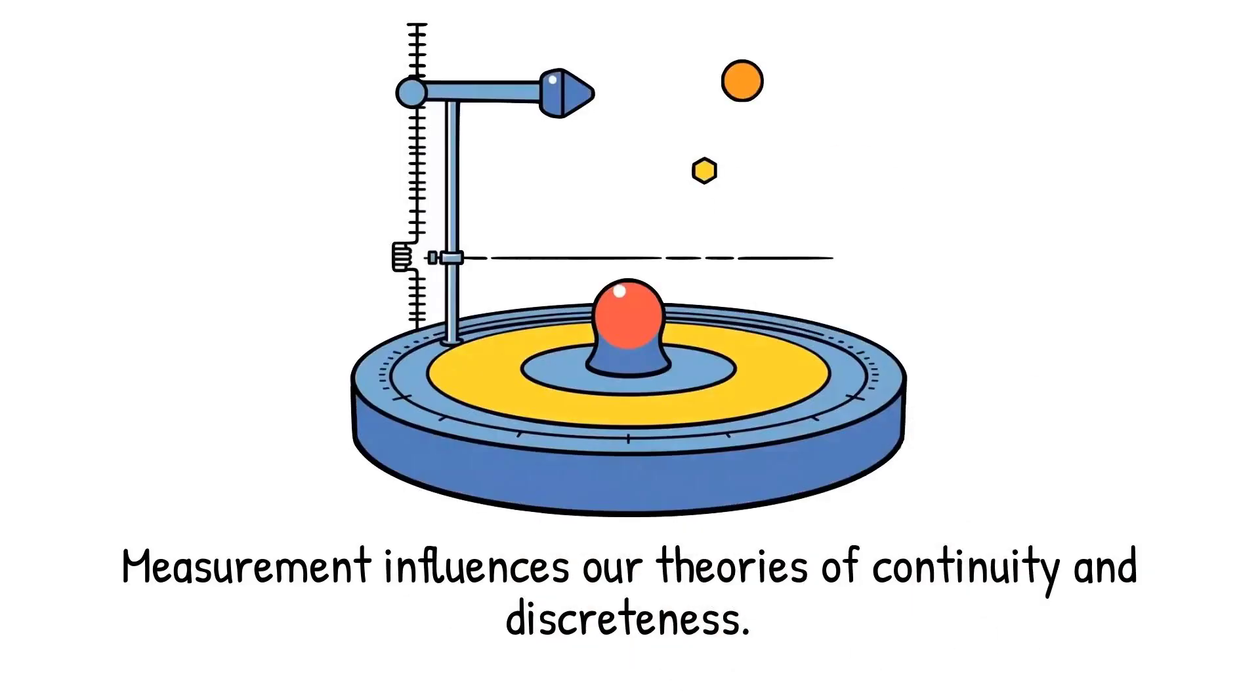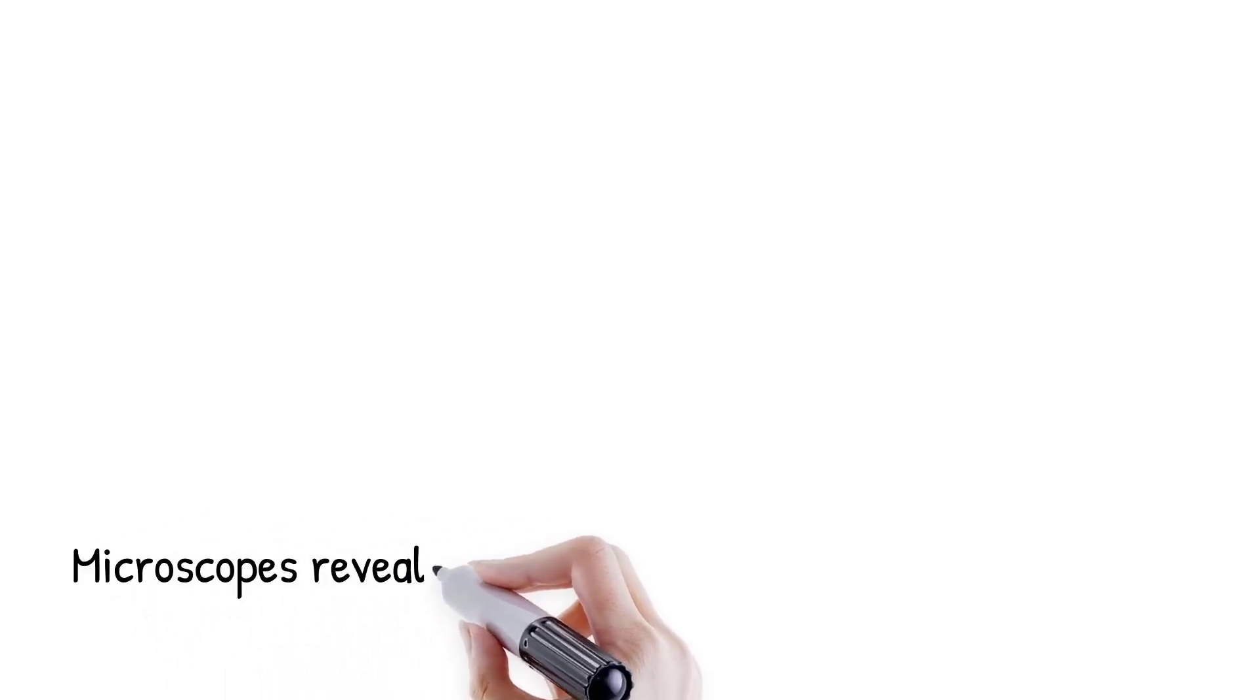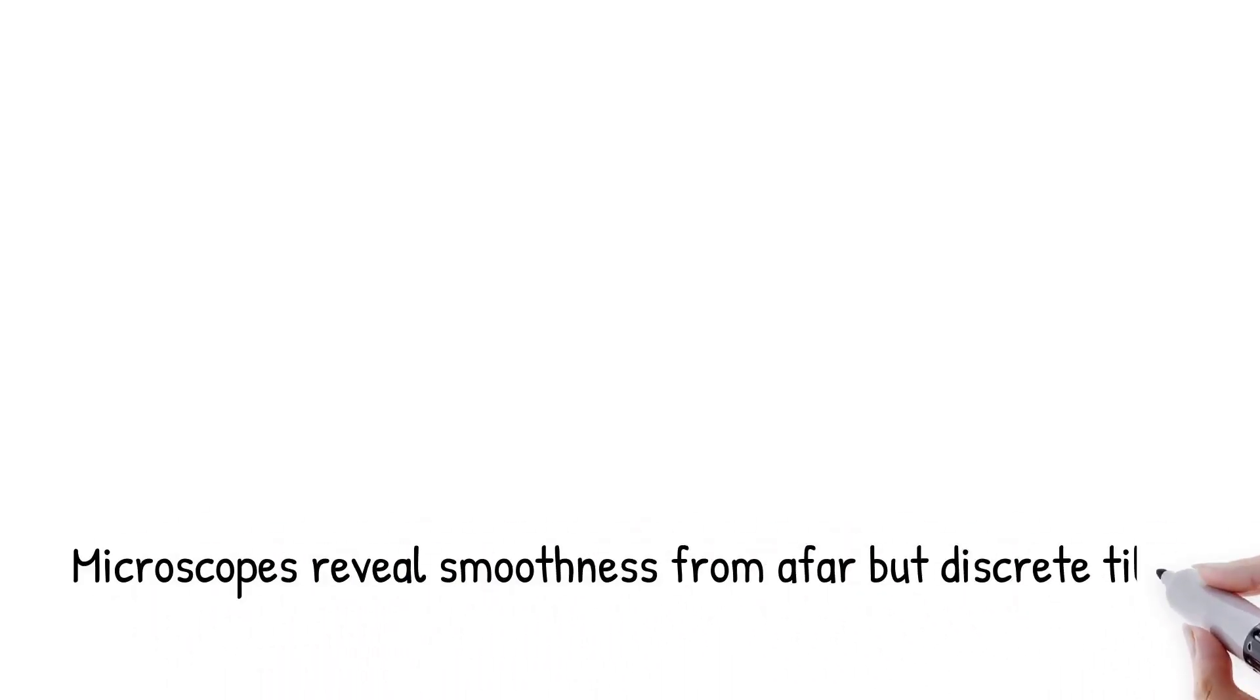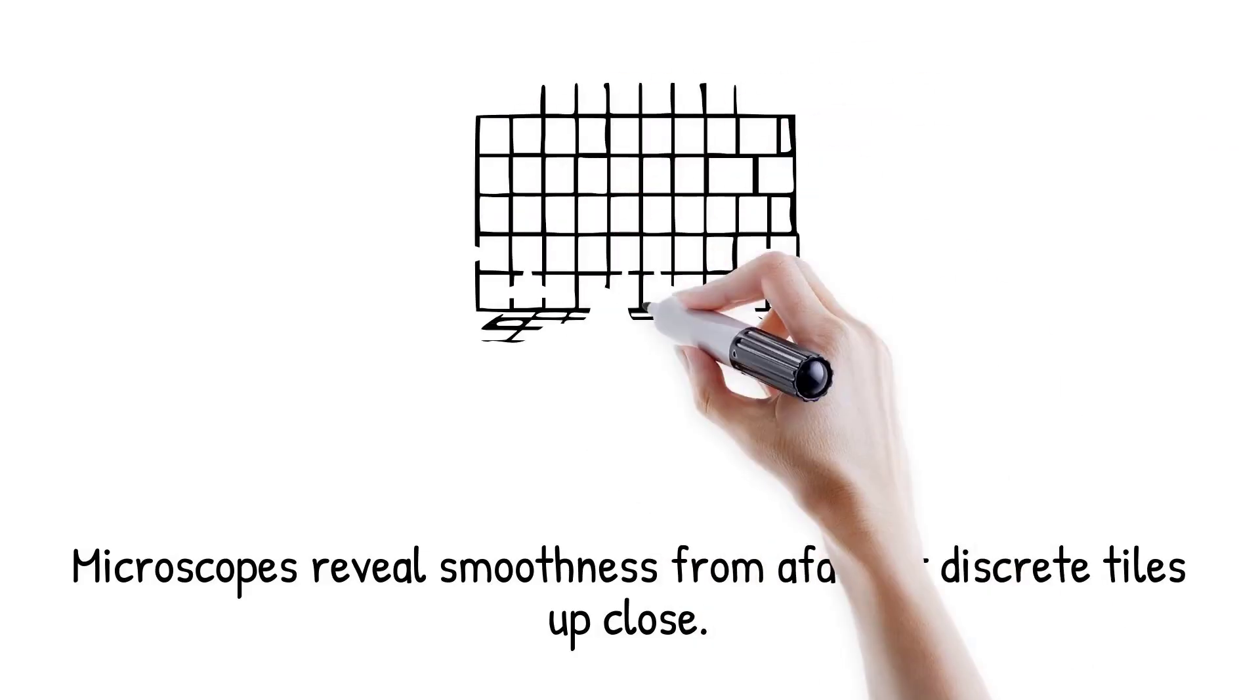Current microscopes cannot probe below the Planck length, leaving the discreteness of space-time unresolved. It is like seeing a mosaic. From afar, it looks smooth. But up close, the tiles are distinct.